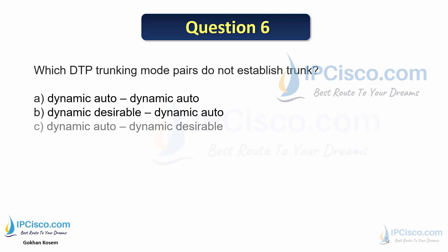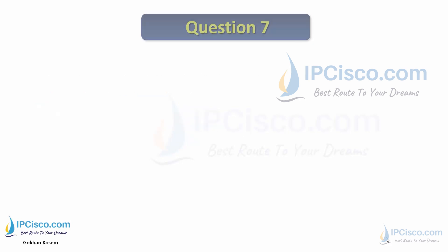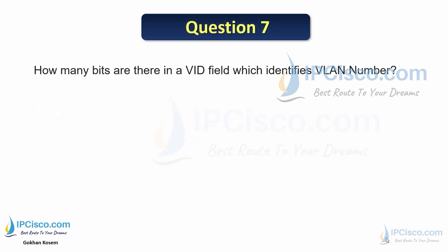Question 6: Which DTP trunking mode pairs do not establish a trunk? If both ends are configured as dynamic auto, the link does not become a trunk link. The answer is dynamic auto / dynamic auto. Question 7: How many bits are in the VID field which identifies the VLAN number — 4, 8, 12, 16, or 32? There are 12 bits in the VID field, so the answer is C.